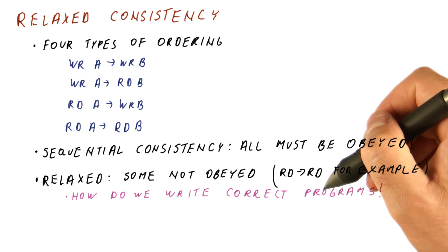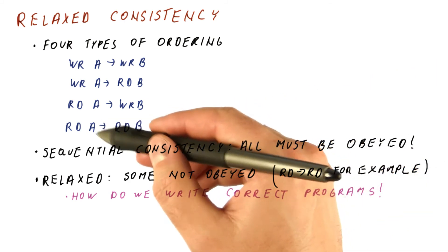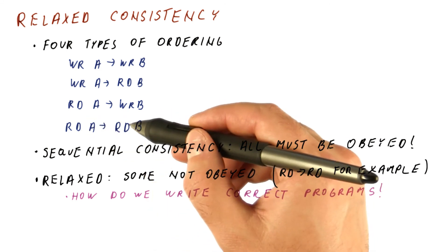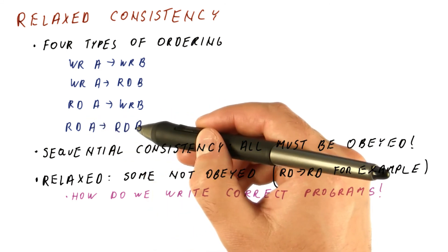For example, how do we do flag synchronization if we cannot expect that after waiting on a flag, we will be able to read the new value of the data?